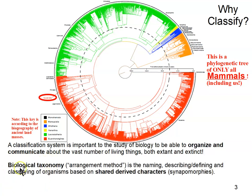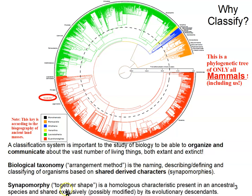This is the work of taxonomists. Biological taxonomy — 'taxonomy' means 'arrangement method' — is simply a method of arranging all discovered species. It involves naming, describing, and classifying organisms based on what we call synapomorphies, also known as shared derived characters. These are one and the same thing. Literally translated: 'syn' means together, 'morph' refers to shape — characteristics that species share together.